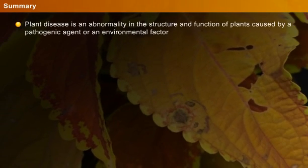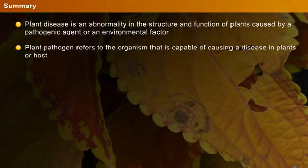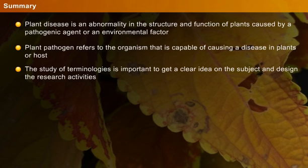Summary: Plant disease is an abnormality in the structure and function of plants caused by a pathogenic agent or an environmental factor. Plant pathogen refers to the organism capable of causing a disease in plants or a host. The study of terminologies is important to get a clear idea on the subject and design research activities.